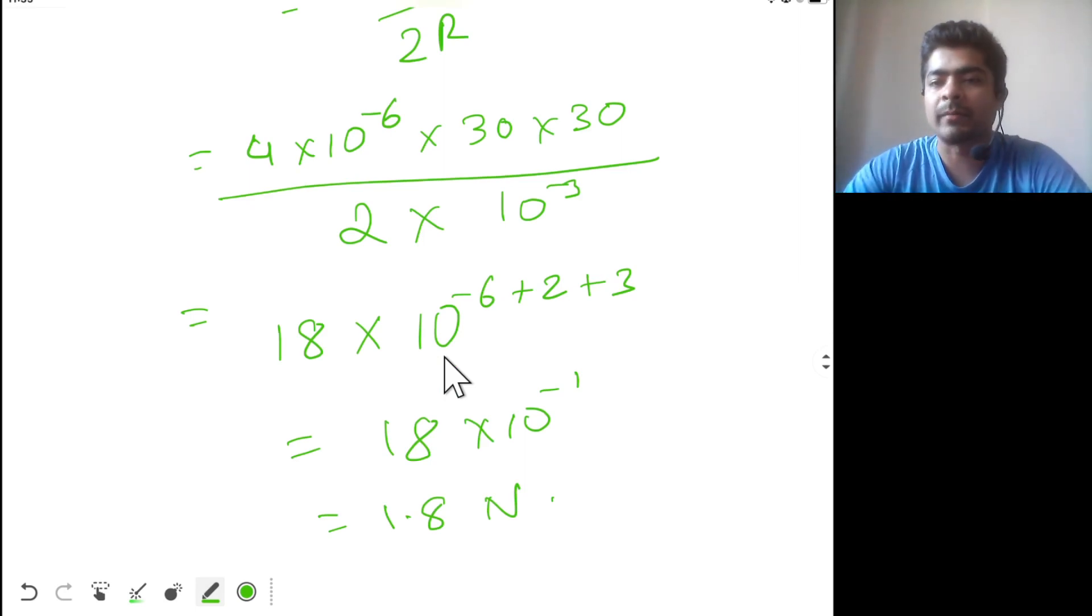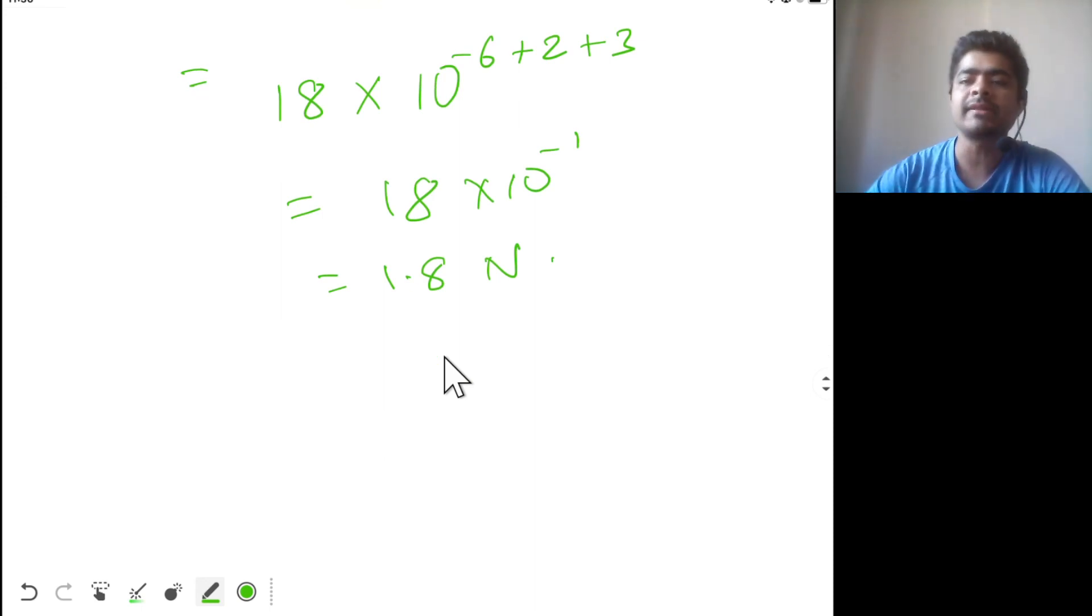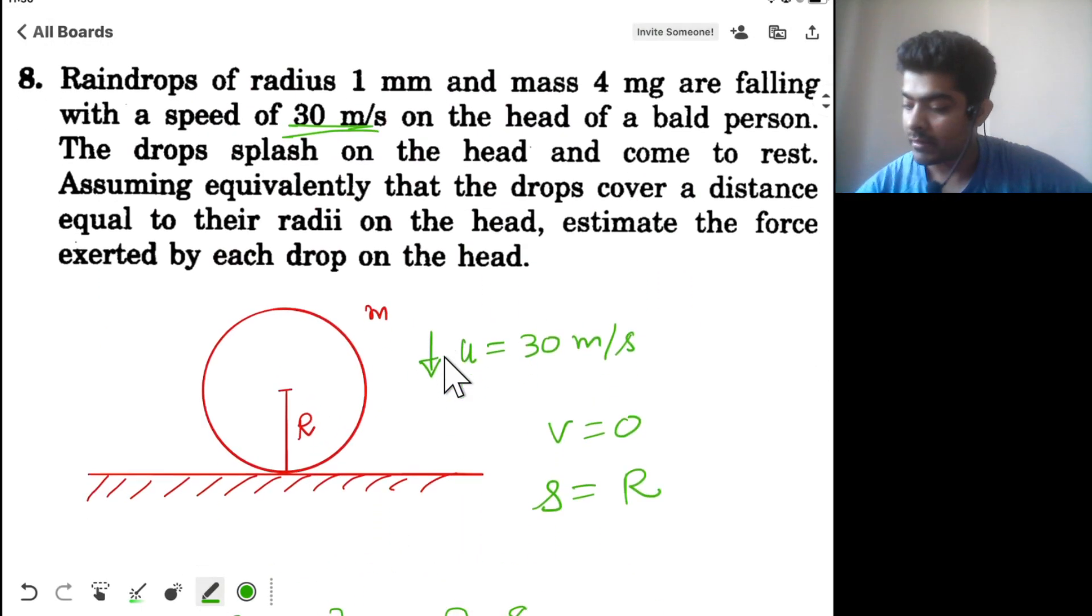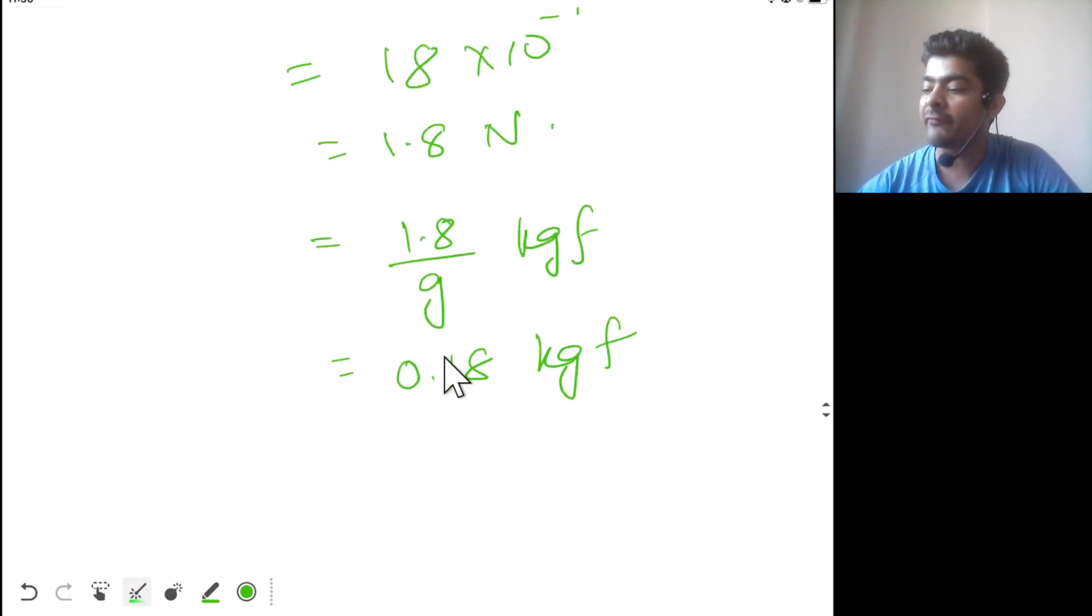One interesting thing, if I convert this into mass, this is equal to 1.8 divided by g kilogram force, or 0.18 kilogram force. So a drop of just 4 milligram mass is able to apply a force equivalent to 0.18 kilogram, that is 180 grams.